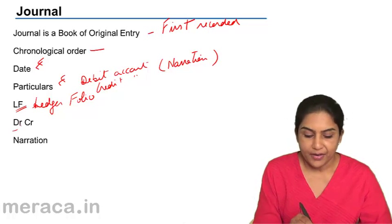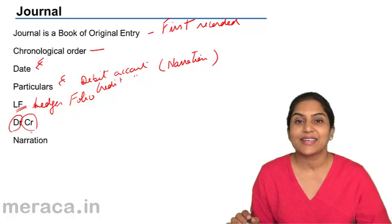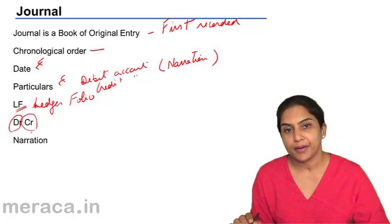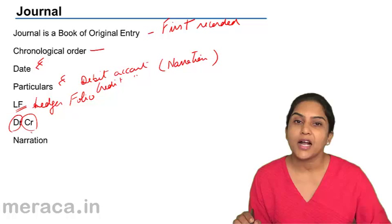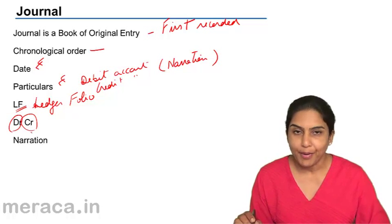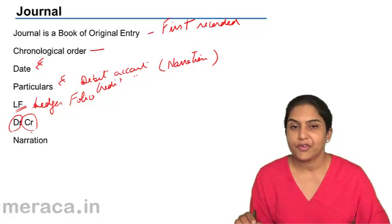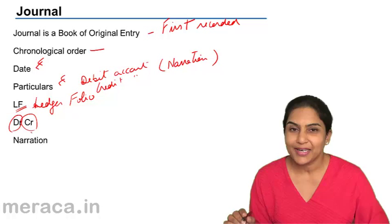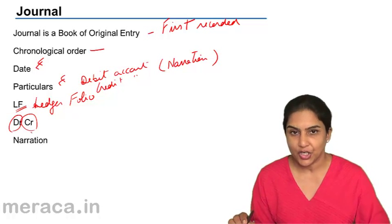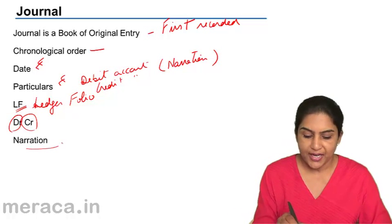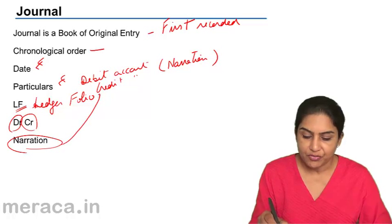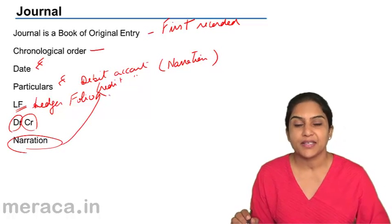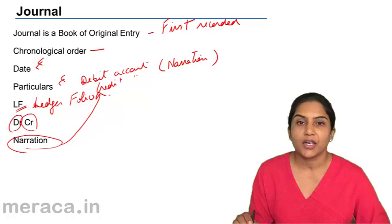We also have two columns - one is a debit column and one is a credit column. When an account is debited, the amount is entered in the debit column, and the amount by which an account is credited is entered in the credit column. Narration is an explanation of the transaction which appears in the particulars column.